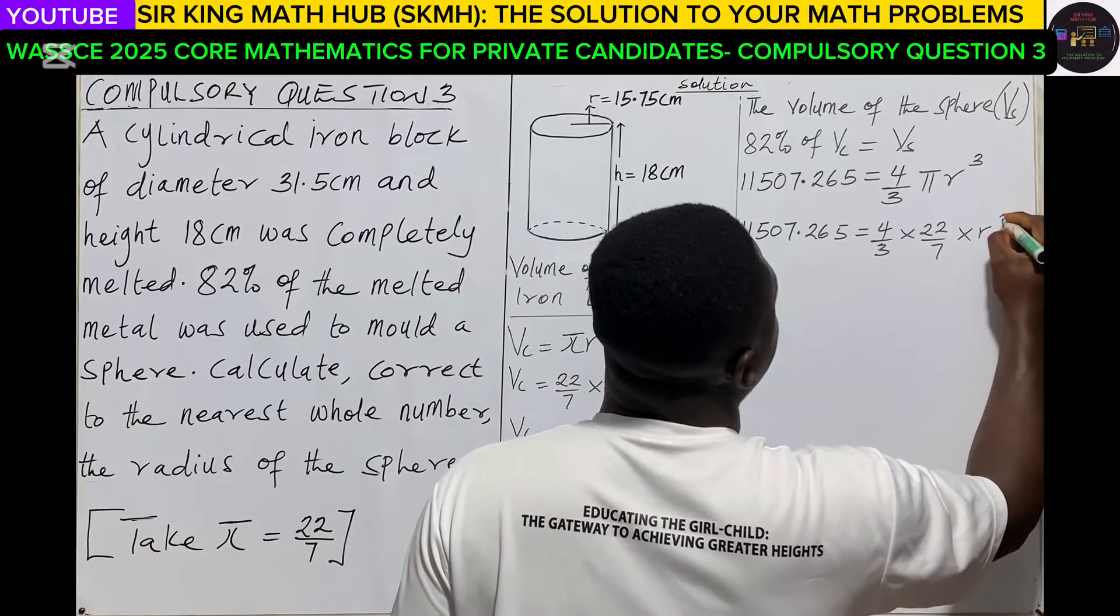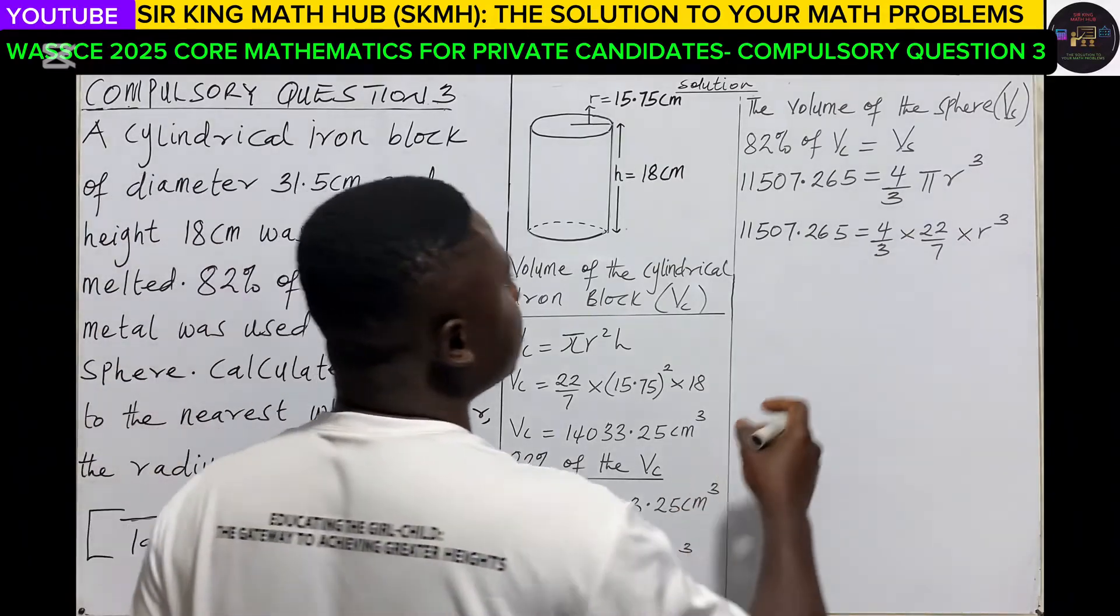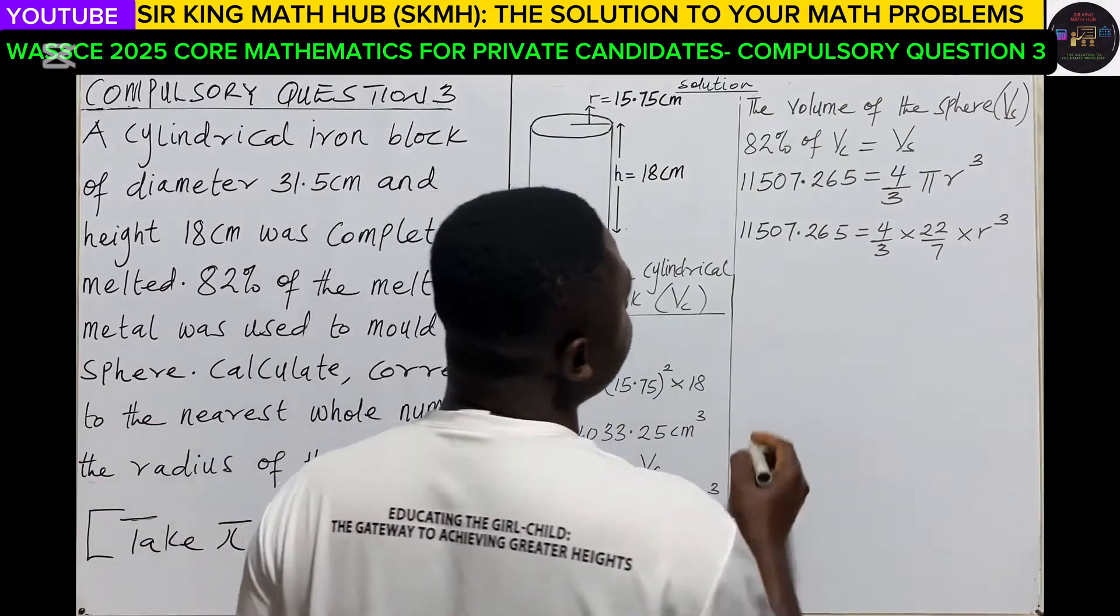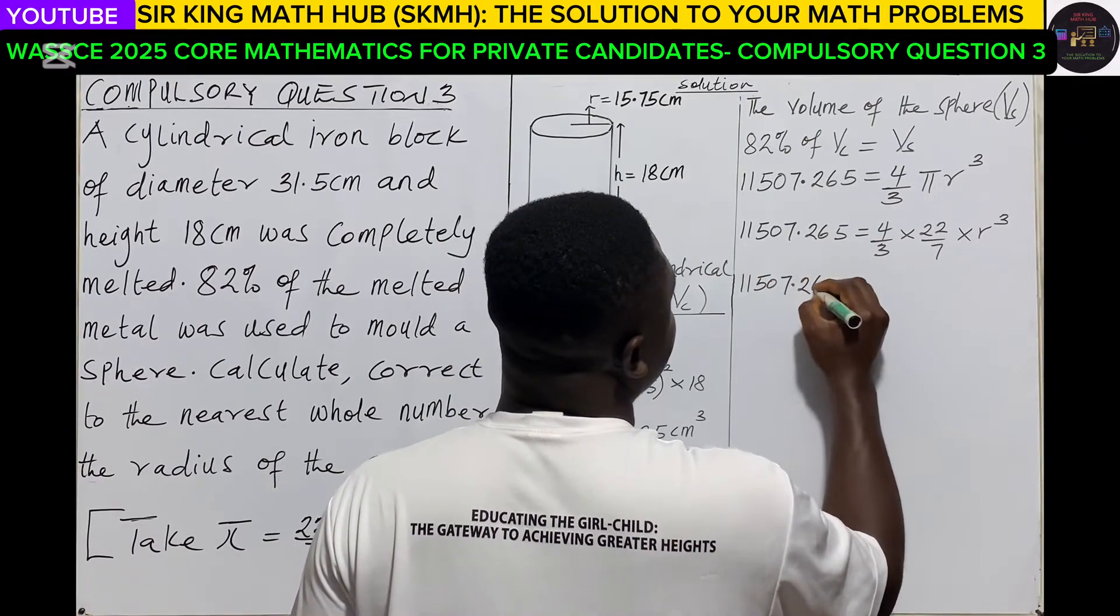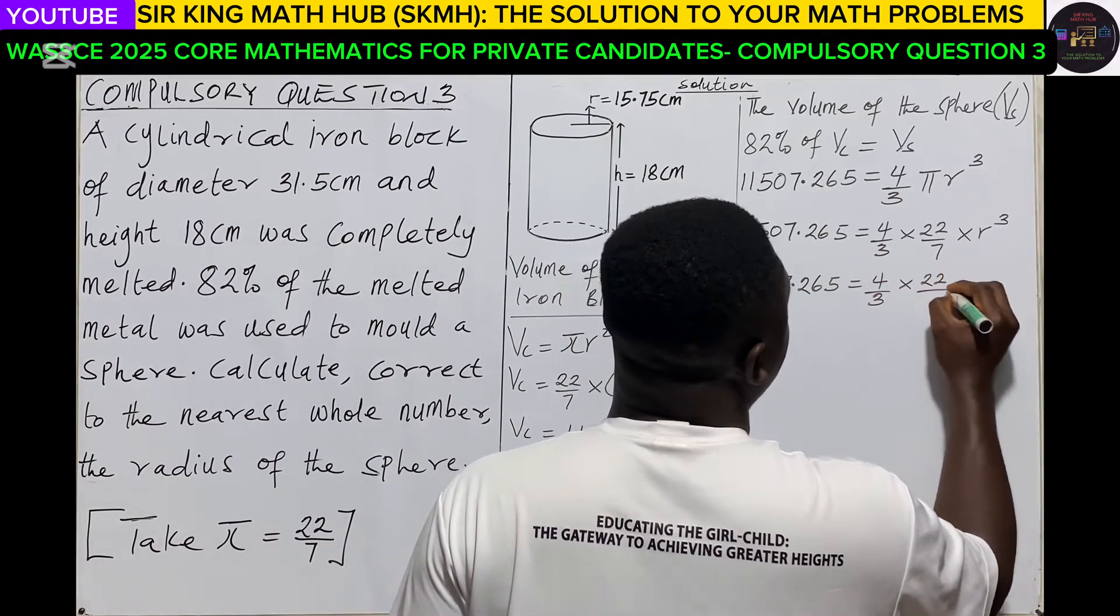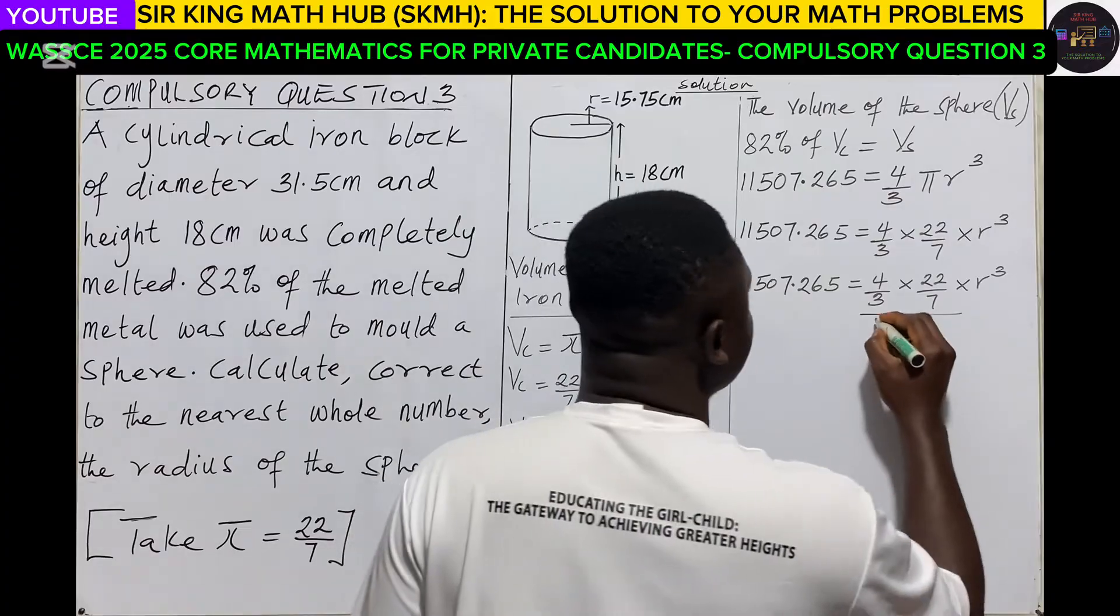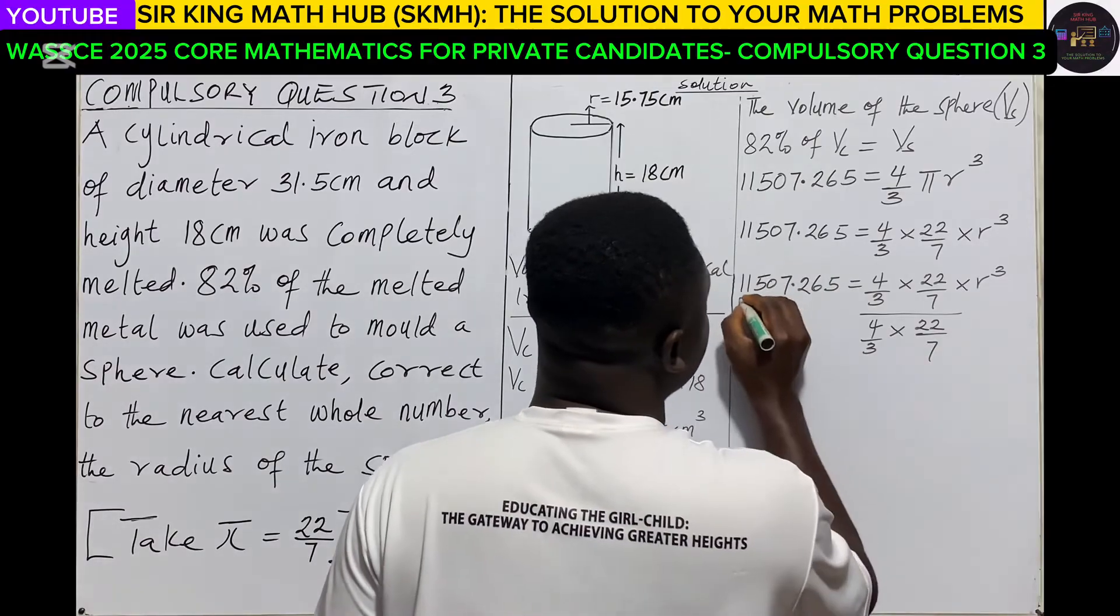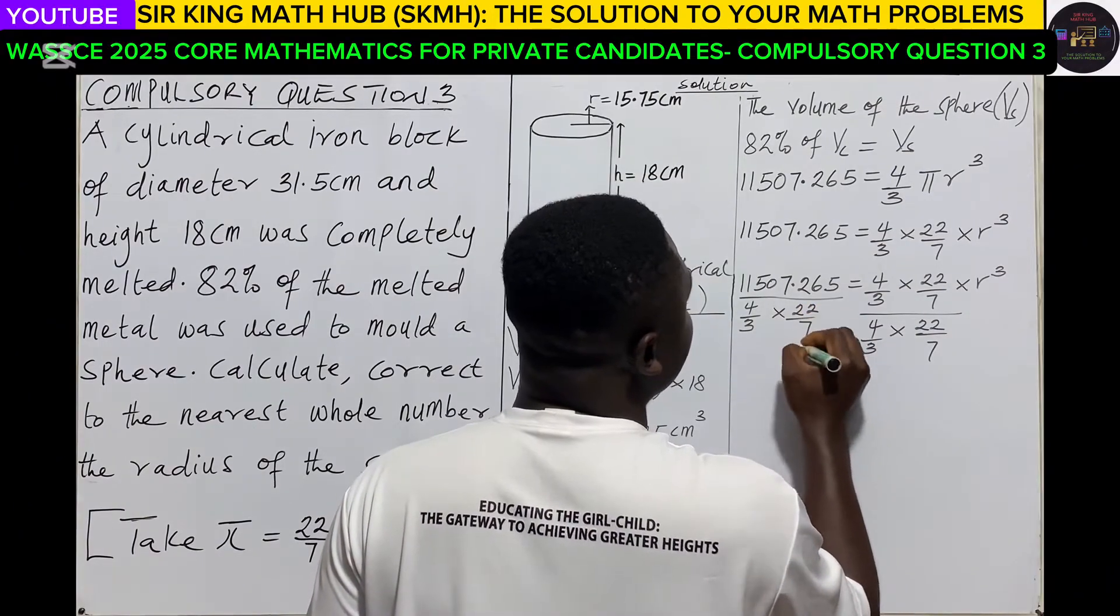So let's solve for the radius of the sphere. So first of all, this is what we are going to do. We are going to divide both sides by the coefficient of r³, which is 4/3 multiplying 22/7. On the left we also divide by 4/3 multiplying 22/7.